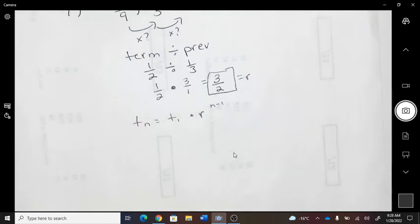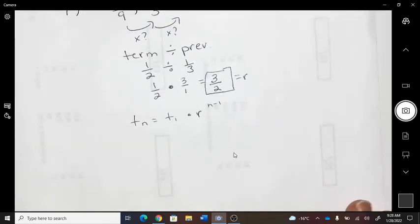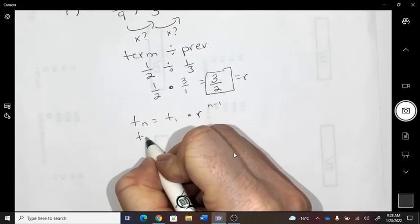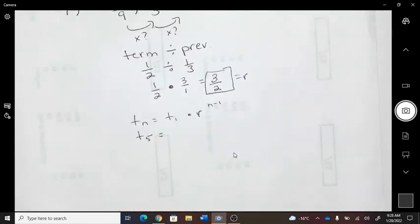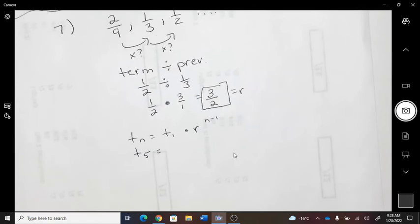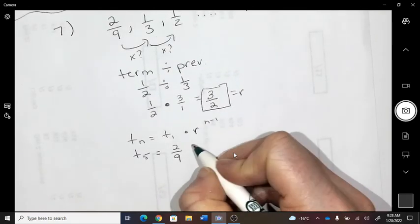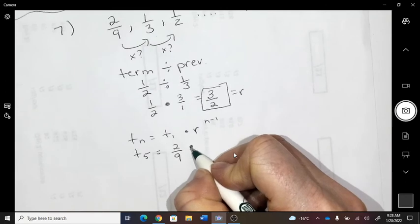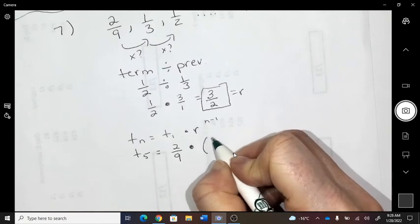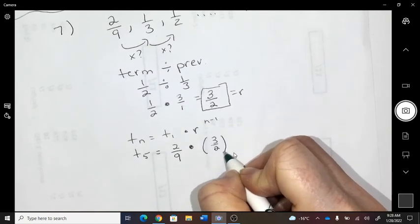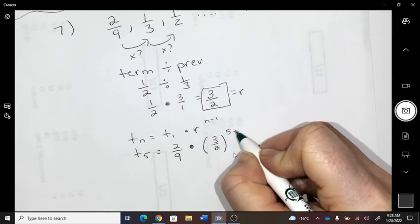Okay, so now you take your formula. You all have a formula sheet. You find it. So term five equals the first term, which is two-ninths, times the ratio to the five minus one.